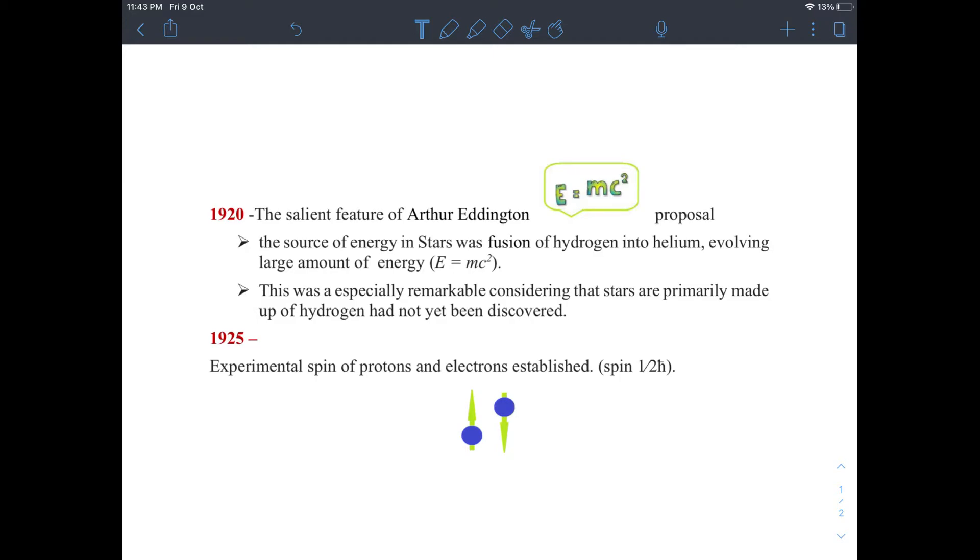Around 1925, the spins of proton and electrons were measured and found to be half h cross. Rutherford's model performed very well before the nuclear spin experiments were conducted. According to Rutherford's model, the spin of nitrogen-14 should be half h cross. Twenty out of total 21 nuclear particles, that is 14 protons and 7 electrons, pair up to cancel each other's spin with the remaining spin half of the last particle.